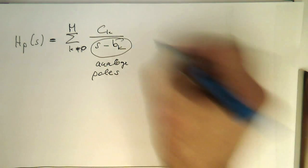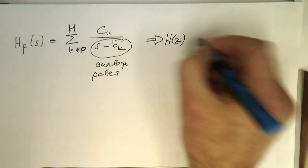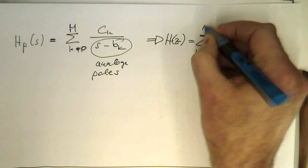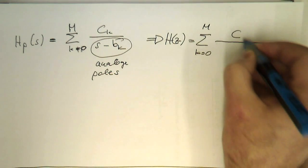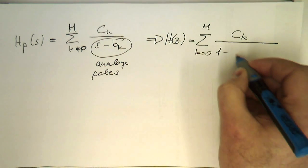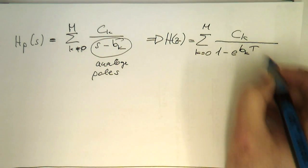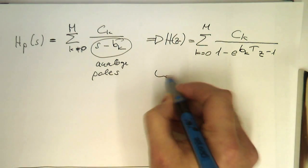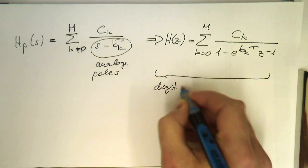And obviously with this knowledge, we can directly create a digital IIR filter equation. So K equals zero to M, and now we've got again our C_Ks here, but these poles now translate into one minus e to the B_K T Z to the minus one. So that's essentially our digital filter.